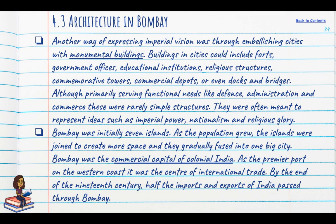We now come to Bombay, where we will discuss architecture — though Madras and Calcutta also had their share of colonial architecture. One of the most powerful ways of expressing the imperial vision is through creating monumental buildings: forts, government offices, educational institutions, religious structures, commemorative towers, commercial depots, docks and bridges. Although primarily serving functional needs such as defence, administration and commerce, they were rarely simple structures — they were meant to represent ideas such as imperial power, nationalism or religious glory.